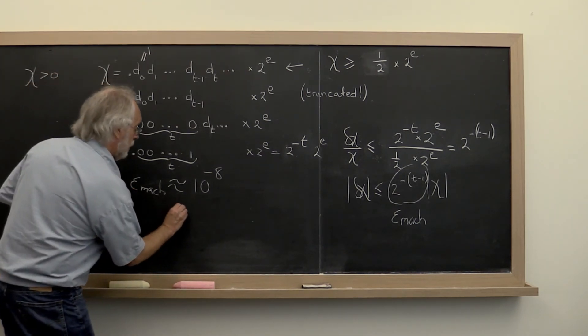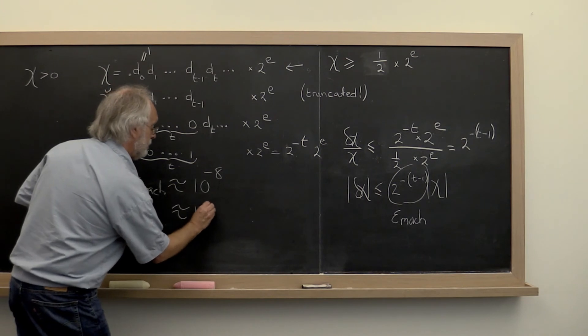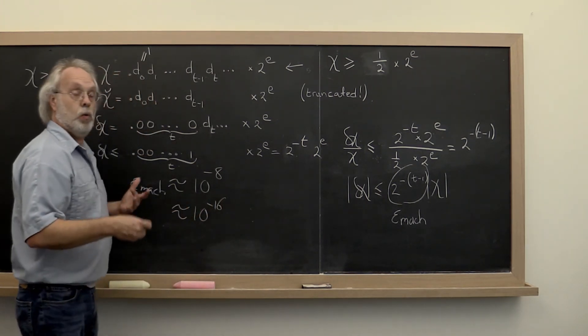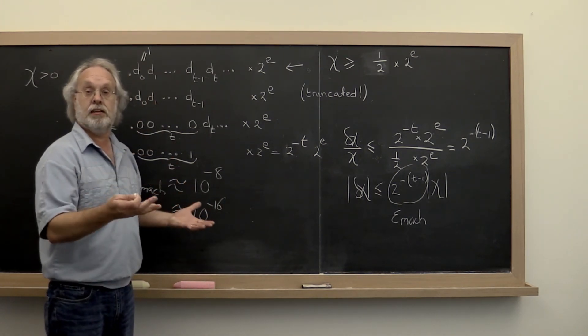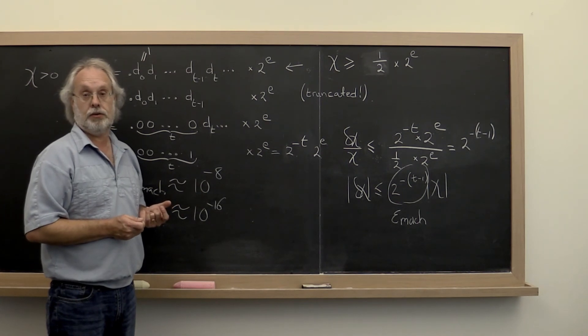Okay? The machine epsilon when you use double precision numbers is roughly 10 to the minus 16th. What does that mean? That means you have 16 decimal digits of accuracy.